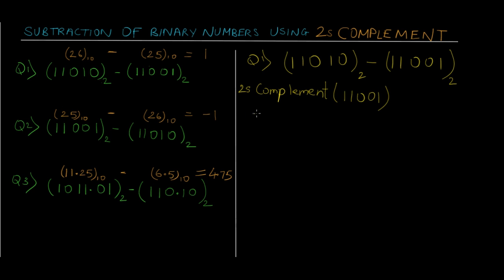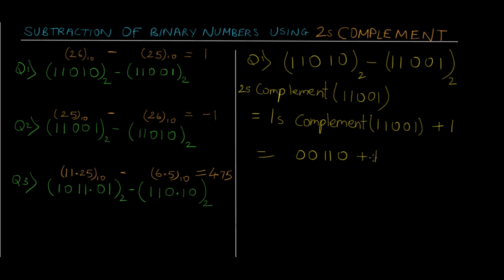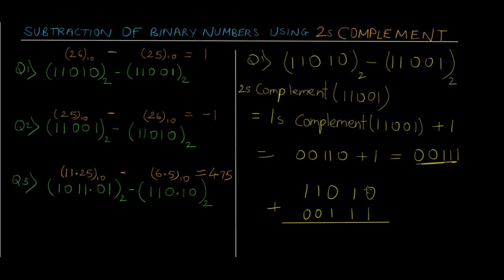2's complement of 11001 is equal to 1's complement of that same number plus 1. We just have to invert the bits — 0's become 1 and 1's become 0 — giving us 00110 plus 1, which is 00111. Now we just need to add this value to the first value, so we have 11010 plus 00111.